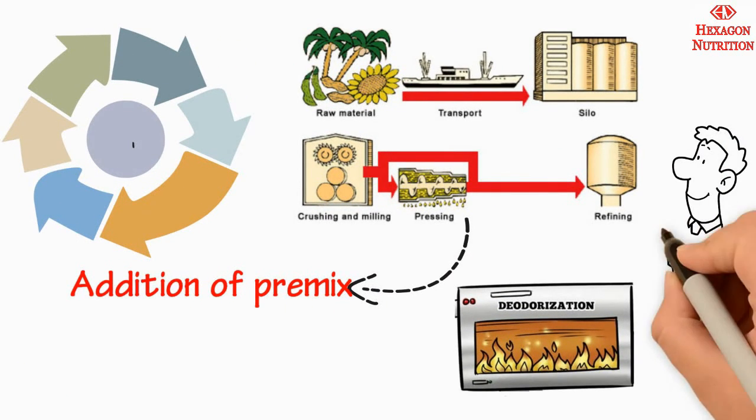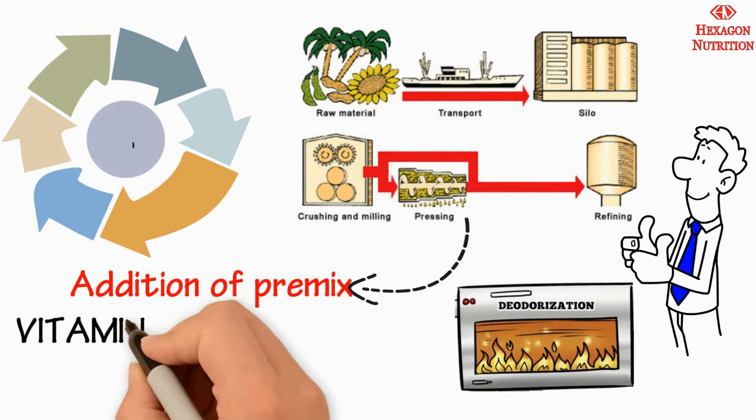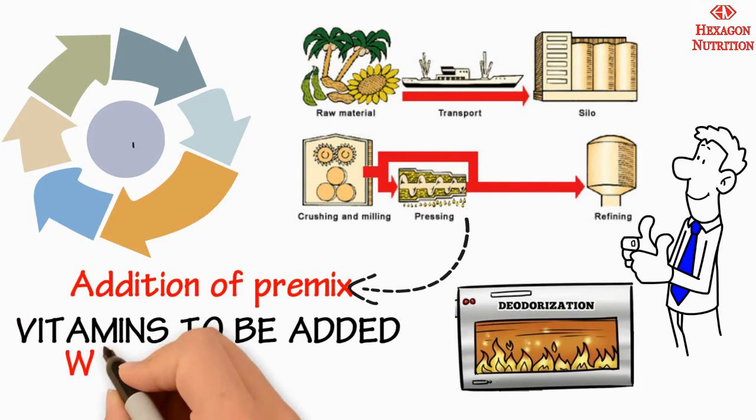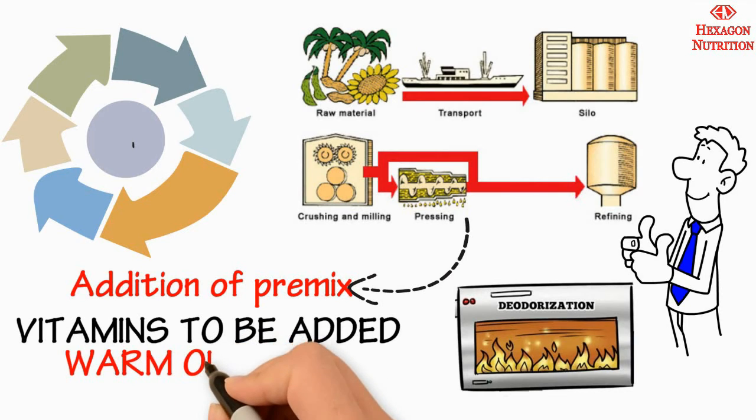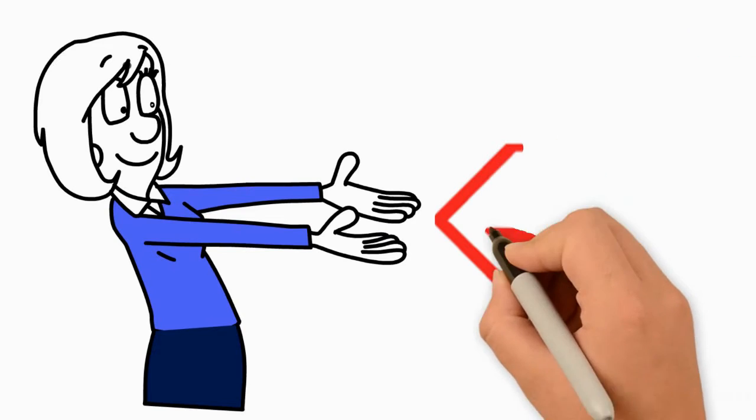In order to ensure uniform mixing of these vitamins in the oil, the intended amount of vitamins to be added is measured and added to a smaller portion of warm oil, 40 degrees Celsius to 50 degrees Celsius, which is then added to the bulk of oil prior to blending.